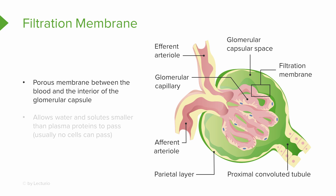Glomerular filtration happens across the filtration membrane, which is a porous membrane between the blood and the interior of the glomerular capsule. This membrane allows water and solutes smaller than plasma proteins to pass, and normally no cells are able to pass through this membrane.